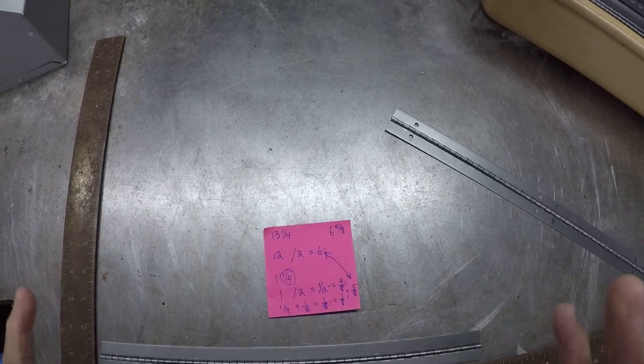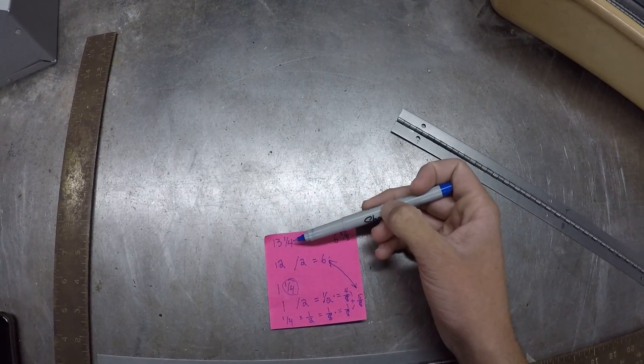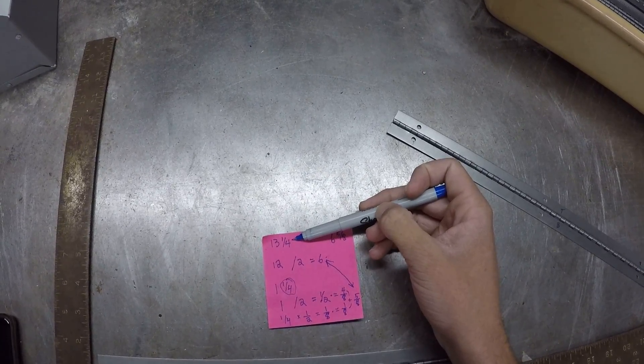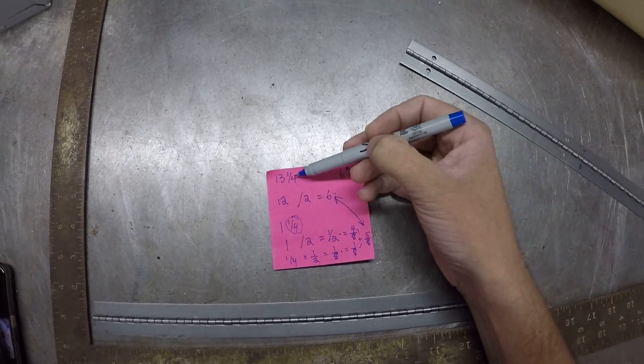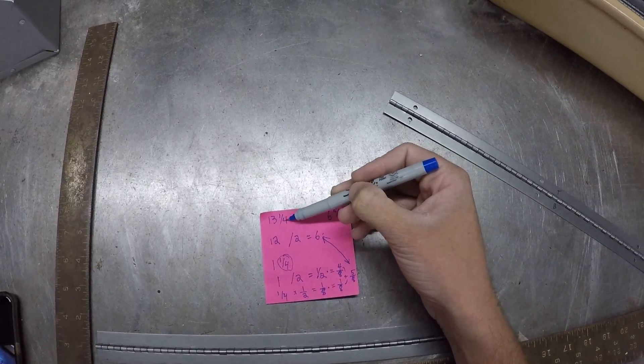So a lot of little mental breakdowns to take that 13 and a quarter and figure out in your head how to break this apart and find out half of that. Six and five eighths.